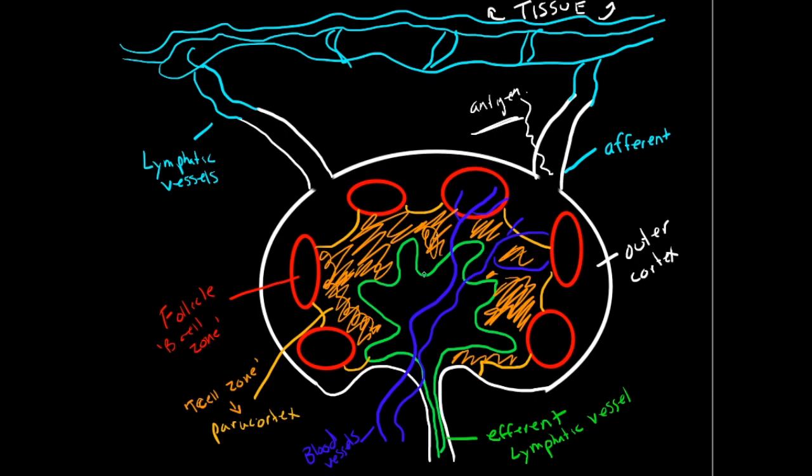So the lymph node structure is kind of just bean shaped. It has sinuses, afferent and efferent lymphatic vessels, blood vessels, and then it has this. So it has the outer cortex here, your follicles, your paracortex, and then on the inside here is called the medulla. And I will label that in green. So this is the medulla.